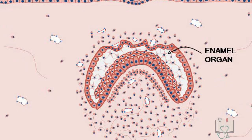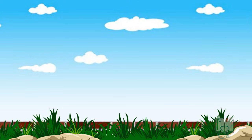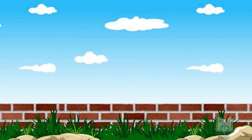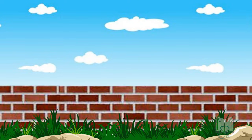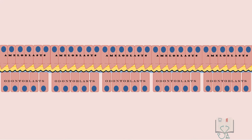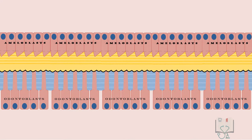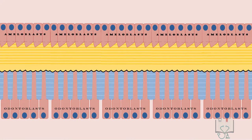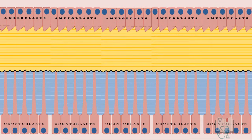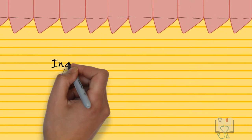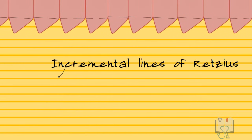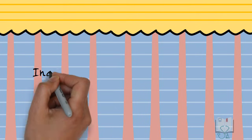Finally, apposition. In this stage, there is deposition of the hard tissues of the tooth. Appositional growth is an additive growth characterized by regular and rhythmic deposition of tissue. Ameloblasts and odontoblasts start deposition of enamel and dentine respectively. There are periods of activity alternating with periods of rest, which give rise to the incremental lines in enamel and incremental lines in dentine.